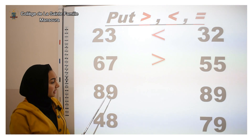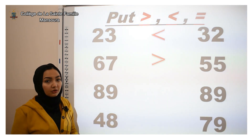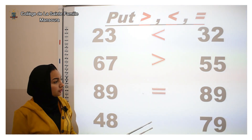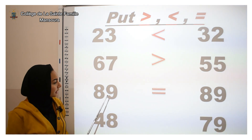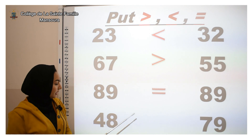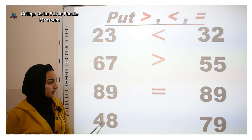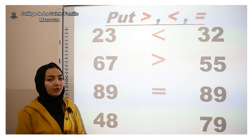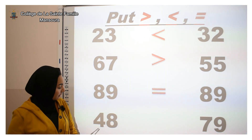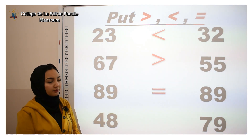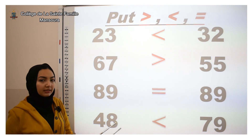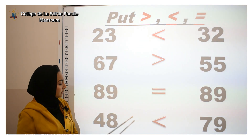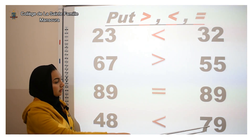This is eighty-nine and eighty-nine. Are they different or the same? Yes, they are the same, so eighty-nine is equal to eighty-nine. The last one: forty-eight and seventy-nine — which one is greater? Yes, seventy-nine. We read it like: forty-eight is less than seventy-nine.